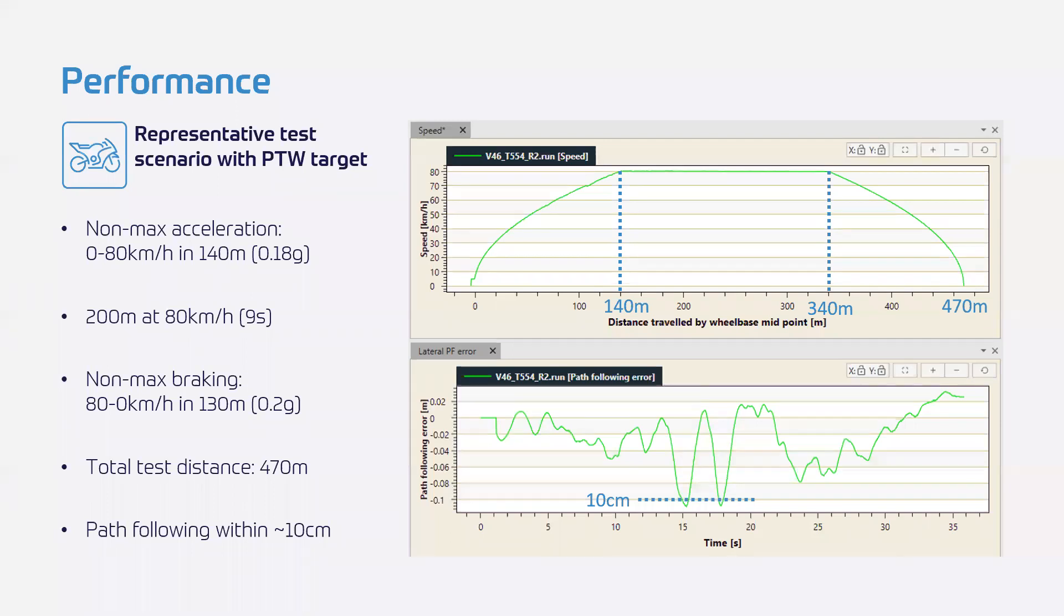So, let's zoom in a little bit and look at a test. I'm presenting to you now a representative test scenario with a PTW target attached. And the graph shows a non-max acceleration from 0 to 80 kilometers per hour. And we can do this even at non-maximum acceleration in 140 meters, which is an average of 0.18 G. We then have 200 meters at 80 kilometers per hour, which is nine seconds of test time. And then we have non-maximum braking from 80 down to 0 in 130 meters, which is an average of 0.2 G. Now, of course, you can travel for more than 200 meters at 80 kilometers per hour. But this is just a representative test. And over this test, you only cover 470 meters. So, that's really great. You can actually do meaningful tests without having an excessively long test track.